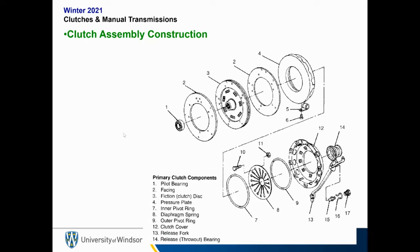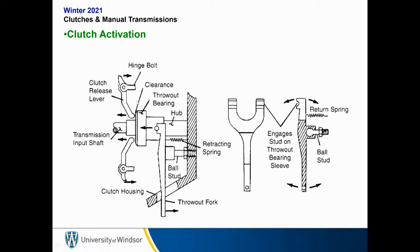Here's a blow-up of a clutch assembly showing all the details of a three-component clutch. For clutch activation, the clutch is engaged unless there is user input. The throwout bearing pushes on the pressure plate. When you actuate the throwout fork, it pushes the throwout bearing forward, which pivots the pressure plate and throws it backwards, allowing the clutch to disengage from the flywheel. A return spring forces the system to stay engaged under steady state.